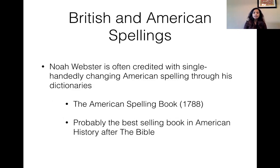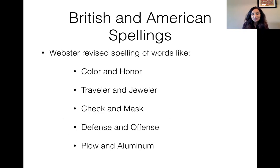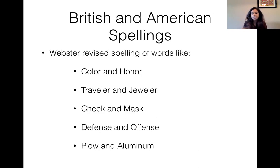The person credited with changing spelling in American English is Noah Webster and his American Spelling Book of 1788 — probably the best-selling book in American history after the Bible. He revised a lot of spellings from British English: 'colour' (C-O-L-O-U-R) or 'honour' (H-O-N-O-U-R) became 'color' and 'honor.' 'Traveller' and 'jeweller' with two L's became single-L spellings; 'cheque' and 'masque' with Q-U-E changed; 'defence' and 'offence' with C-E became S-E; and 'plough' became 'plow.' For 'aluminium' — which I still say the British way — in American English it's 'aluminum,' without the extra 'I.'